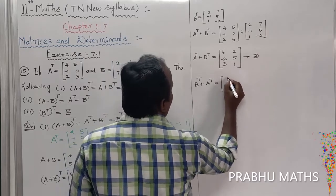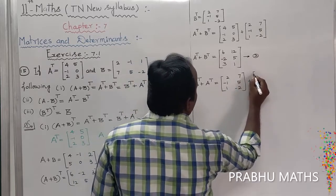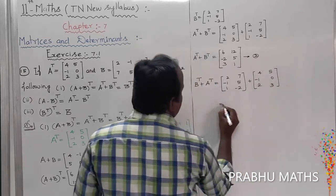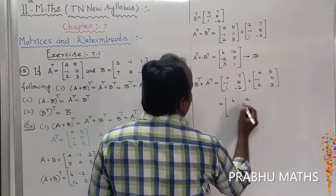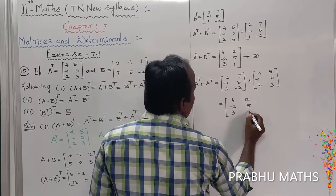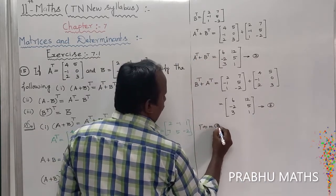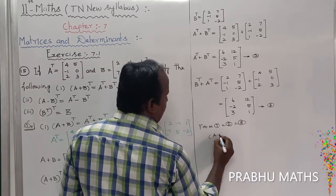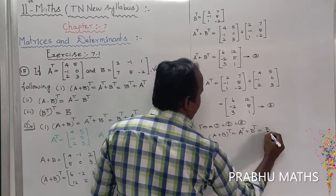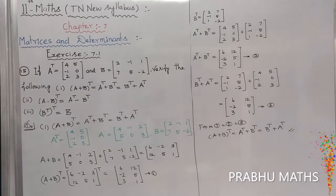Next, find B transpose plus A transpose. B transpose is 2, 7, minus 1, 5, 1, minus 2, plus A transpose 4, 5, minus 1, 0, 2, 3. That gives: 6, 12, minus 2, 5, 3, 1. That is equation number 3. From equation 1 equal to 2 equal to 3, A plus B the whole transpose equals A transpose plus B transpose equals B transpose plus A transpose. All conditions are equal, so the first subdivision is completed.